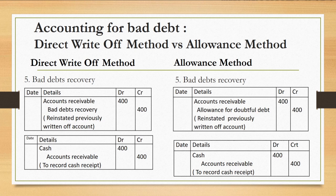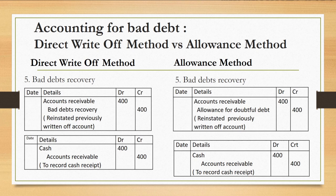Under the direct write-off method, when bad debts are recovered in the future, the first entry is: debit account receivable, credit bad debt recovery, to reinstate the previously written-off amount. Then debit cash and credit account receivable. Under the allowance method, when bad debts are recovered, debit account receivable and credit allowance for doubtful debts to record the recovery. Then debit cash because we receive payment from the customer, and credit account receivable to close it.